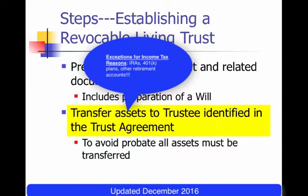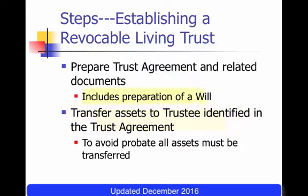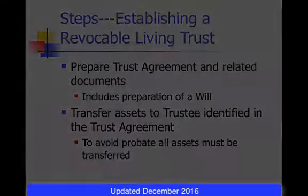Your retirement plan accounts and IRAs use beneficiary designations. You might make the trustee the beneficiary of those, but there are important income tax reasons why you would not as well. These are all things that need to be discussed while you're setting this type of plan up.